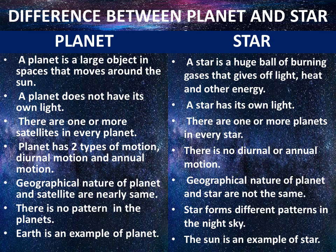Third difference: There are one or more satellites in every planet, and for stars there are one or more planets in every star. Fourth difference: A planet has two types of motion — diurnal motion and annual motion. For stars, there is no diurnal or annual motion.